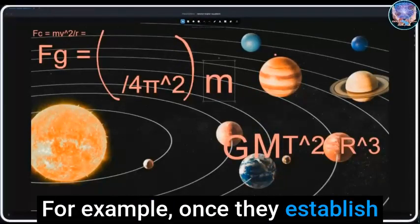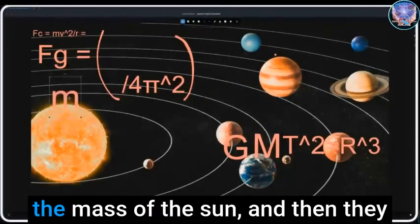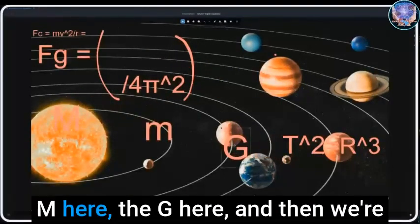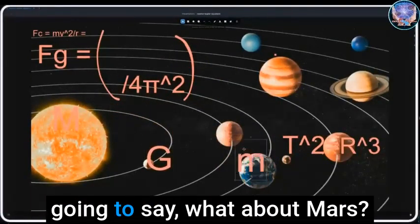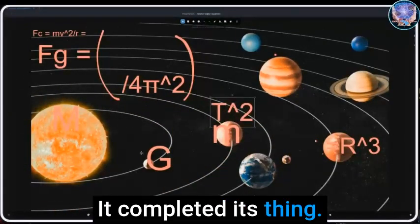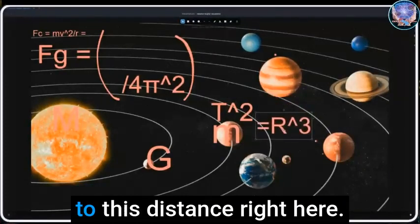No, the mass of the two bodies cancels out. It's just about the periodicity of the event and then they could backwards derive the mass of something. For example, once they establish this relationship, they establish the mass of the sun. Then they go, okay, we're gonna put the big M here, the G here, and then we're gonna say what about Mars?